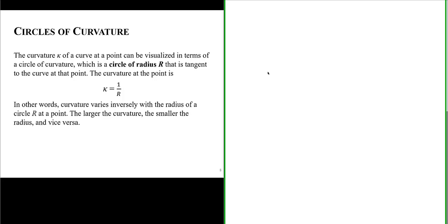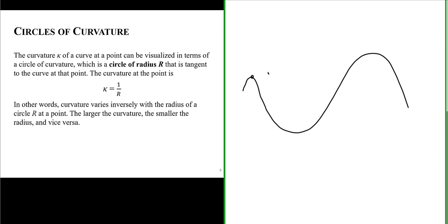The curvature of a curve at a point can be visualized in terms of a circle of curvature, which is a circle of radius r. Let me show you what we mean by that. Let's say I have a curve that looks like this. Let's look at circles drawn where the perimeter are at various points along our curve.